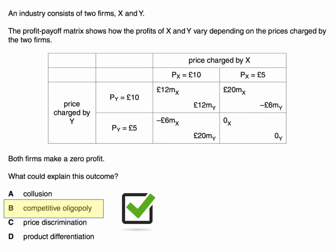And here's the explanation. It's not A, because if both firms colluded to fix the price high at £10 each, then they would both stand to make a profit of £12 million. That would be the top left of the payoff matrix table. Of course, we're told that they're both making a zero profit.